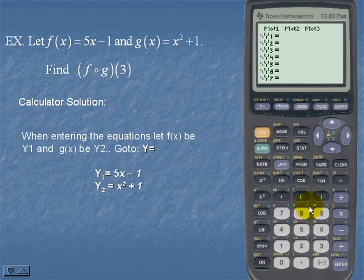We're simply going to let y sub 1 be 5x minus 1. I'm going to hit enter. We're going to let y sub 2 be x squared plus 1. I'm also going to hit enter.